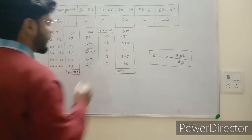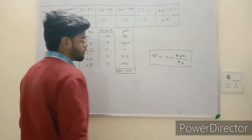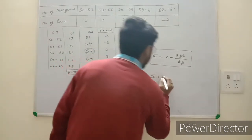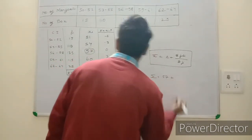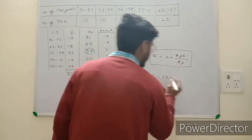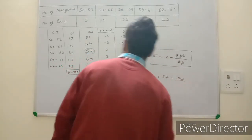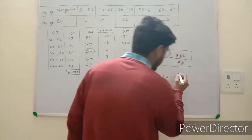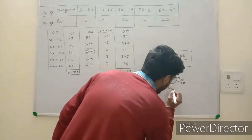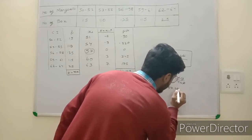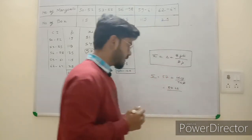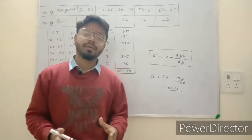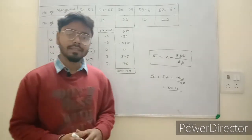Summation of fi = 400, and summation of fi×di = 100. Putting into the formula: x̄ = 57 + (100/400) = 57 + 0.25 = 57.25. So the assumed mean method gives 57.25.